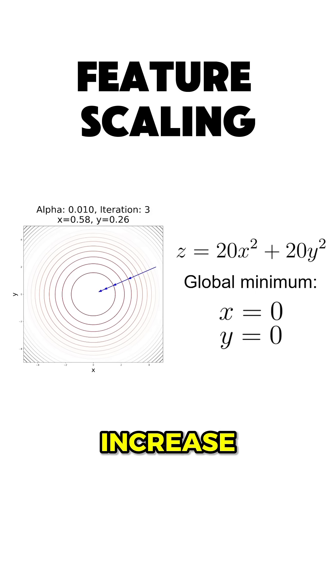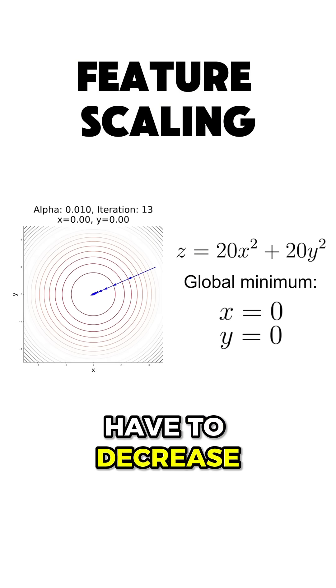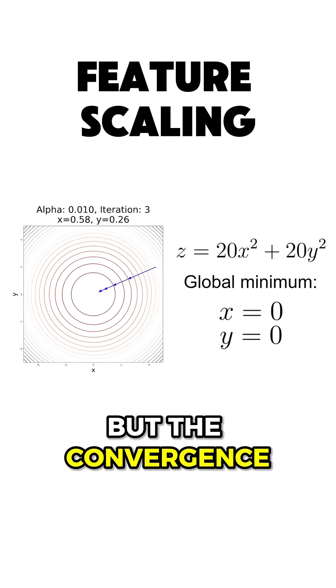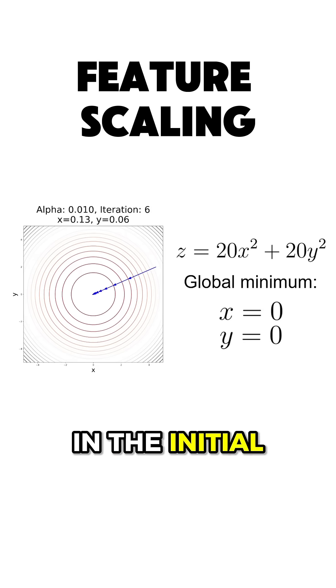And if we increase both the coefficient of x and y to the same value, then we would, of course, have to decrease the learning rate alpha, but the convergence rate would be the same as in the initial case.